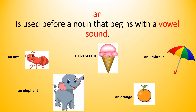The article 'an' is used before a noun that begins with a vowel sound. That means when a word or a noun starts with a vowel, or more specifically a vowel sound, we use 'an' before such words. For example, this is a picture of an ant. The first letter of this word, 'a', is a vowel. Thus, we use the article 'an' before the word, so we read it as 'an ant'.